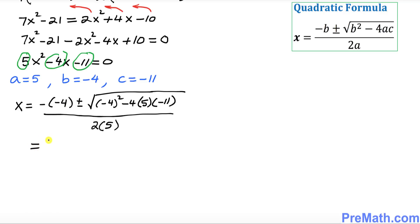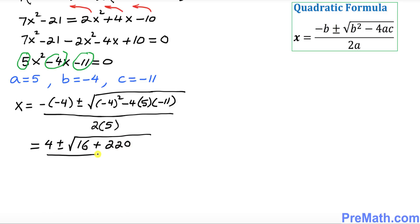Simplifying: negative and negative become positive, giving us 4 plus or minus the square root of 16 plus 220, all divided by 10. That gives us 4 plus or minus the square root of 236, divided by 10.